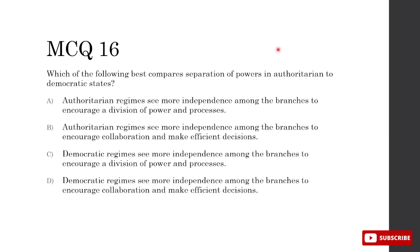What best compares separation of powers in authoritarian versus democratic regimes? Democratic regimes typically have more separation of powers and independence among branches. That rules out A and B, which say authoritarian regimes see more independence. C — democratic regimes see more independence to encourage division of power and processes, creating checks and balances. D — democratic regimes see more independence to encourage collaboration and efficient decisions — actually, separation of powers creates more obstacles and makes policymaking more time-consuming, not more efficient. So C is correct.